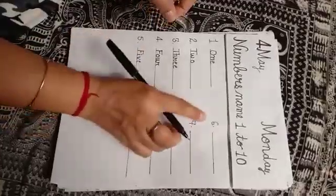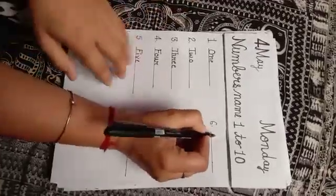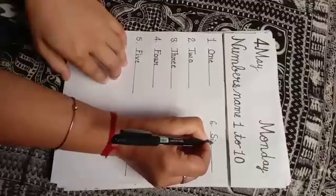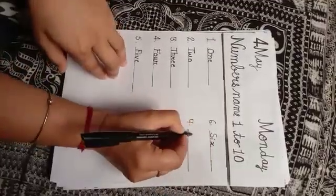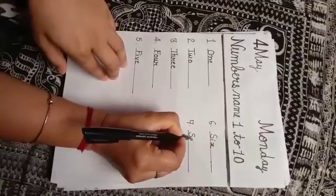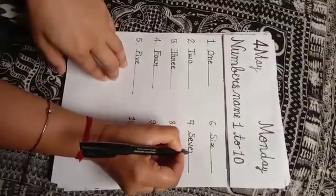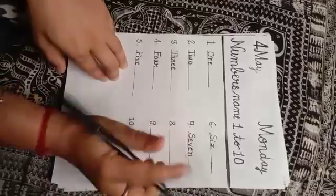Six. S, I, X, six. Seven. S, E, V, E, N, seven.